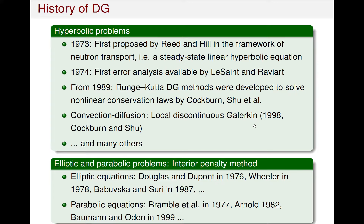There are also many other researchers developing DG methods for hyperbolic equations. In the meantime, the discontinuous Galerkin method was proposed to solve elliptic and parabolic problems. The main class is the so-called interior penalty method. Many active researchers have contributed to designing and analyzing interior penalty methods, including Douglas and Dupont, Wheeler, Babuška, Rivière et al., Brezzi, Arnold, Bockman, Marini et al., for solving elliptic and parabolic equations.